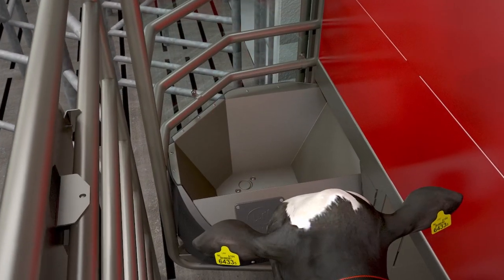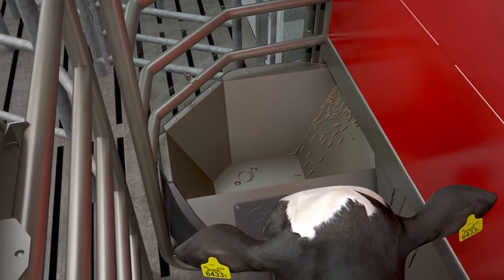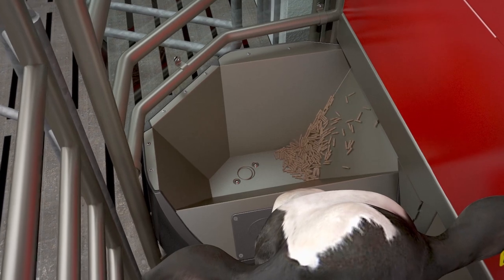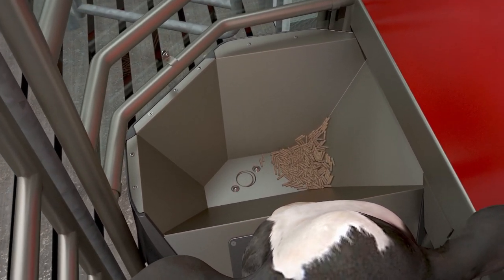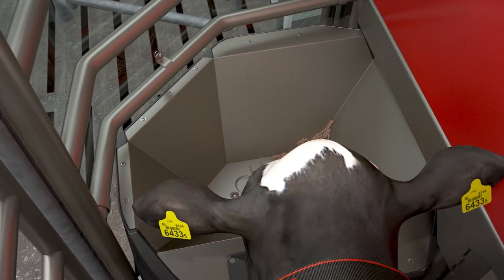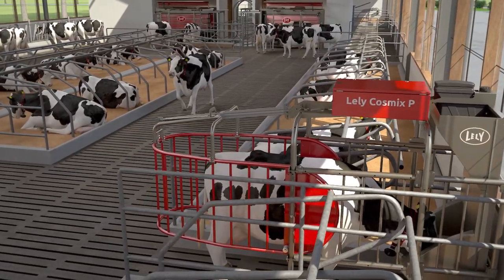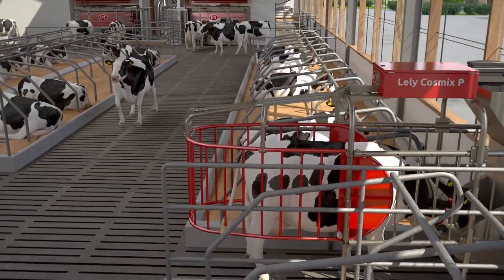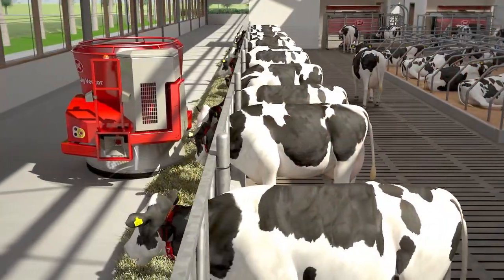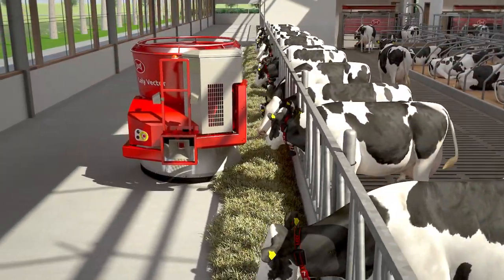Up to five different types of feed can be fed in the Lely Astronaut, including a liquid feed. The rationing is determined by the milk production and the cow's lactation phase. This is also connected to external feeding systems, such as the Lely Cosmix concentrate station and the Lely Vector automatic feeding system.